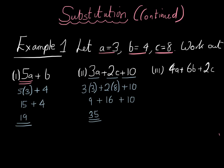Part 3, we have 4a plus 6b plus 2c. So substituting in, we've got 4 lots of a, and a is 3, add 6 lots of b, and b is 4, add 2 lots of c, and c is equal to 8. So 4 times 3 is 12, plus 6 times 4 is 24, plus 2 times 8 is 16. If you add these up, 12 and 24 adds up to 36, and you add yourself another 16, and you get yourself 52.